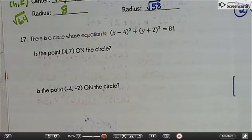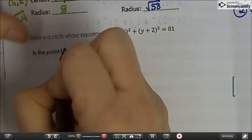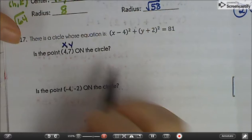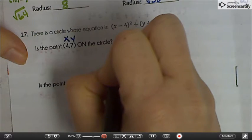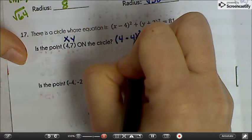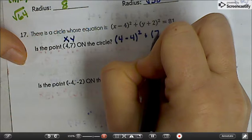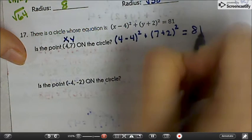All right. So there is a circle whose equation is x minus 4 squared plus y plus 2 squared equals 81. And we want to know, is 4, 7 on this circle? Well, in the formula, the x and the y stand for a point on the circle. So we're just going to plug those in and see what happens. So 4 minus 4 squared plus 7 plus 2 squared. And we're going to see, does that actually equal 81?